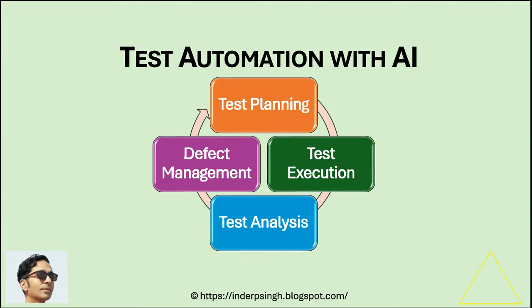This diagram represents the uses of Artificial Intelligence in QA automation. AI tools and techniques can be used in the phases of the test automation cycle, such as test planning, test execution, test results analysis, and defect management.